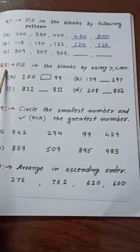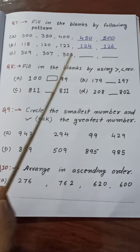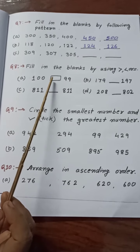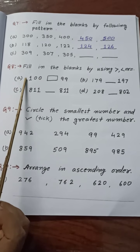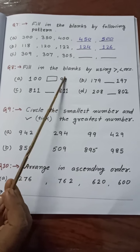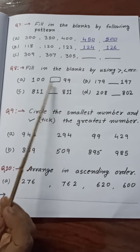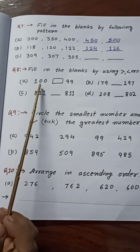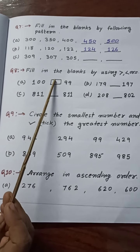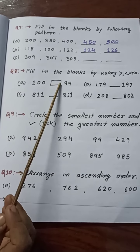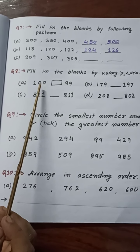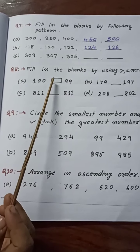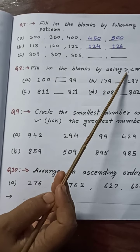Question number 8: fill in the blanks using greater than, less than, or equal sign. This question is about comparing numbers. Here is 100 and here is 99. When comparing, first we check the number of digits — the number with more digits is greater. Here 100 has 3 digits and 99 has only 2 digits. So 100 is greater than 99. Which sign do we put? The greater than sign.